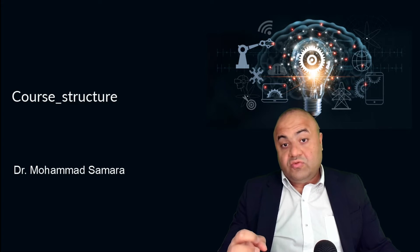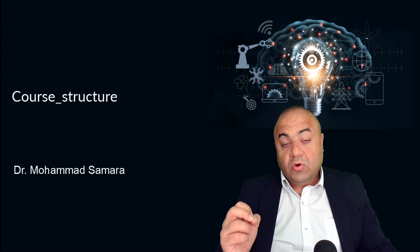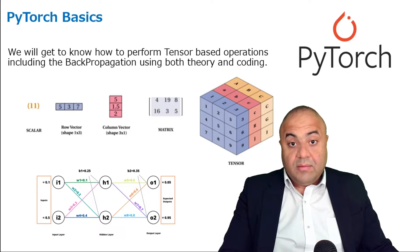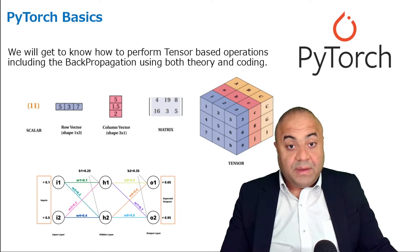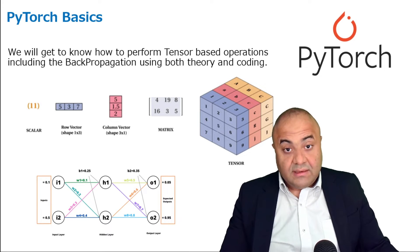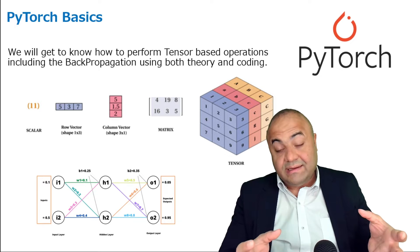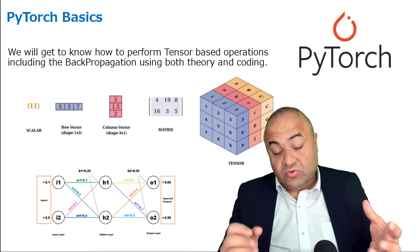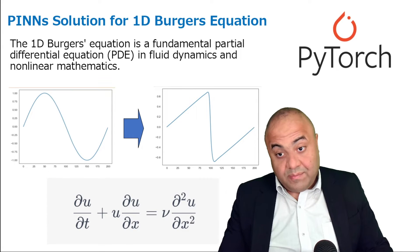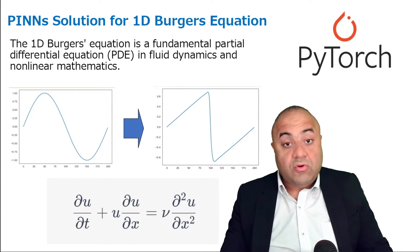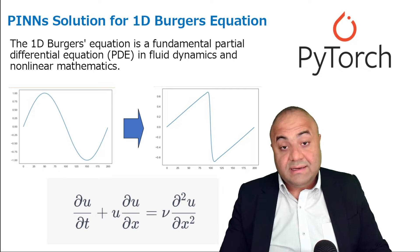We want to focus on using NVIDIA Modulus to solve PINNs problems. But before that, we have to study PyTorch basics in order to be equipped with the tools to calculate tensors and matrices, and to write our own PINNs code using PyTorch. The next step will be writing our own code using PyTorch by applying it to solve the 1D Burger's equation.